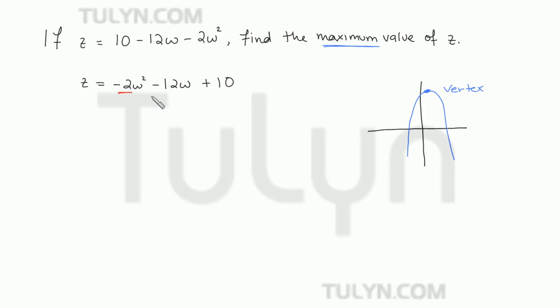And we know how to find the w-coordinate of the vertex, but notice we want to find the maximum value of z. So we're going to need to find the z-coordinate of the vertex at the very end.